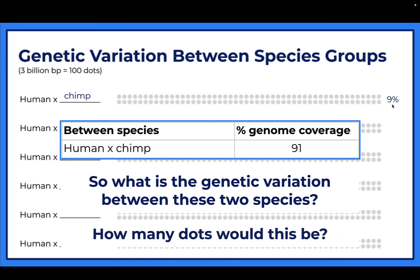How many dots would this be? These 100 dots represent 3 billion base pairs. Remember when adenine pairs with thymine and guanine pairs with cytosine - each of those is a base pair. So 100 dots represents 3 billion base pairs, and 9% of our base pairs are different, meaning you fill in 9 dots out of the 100.